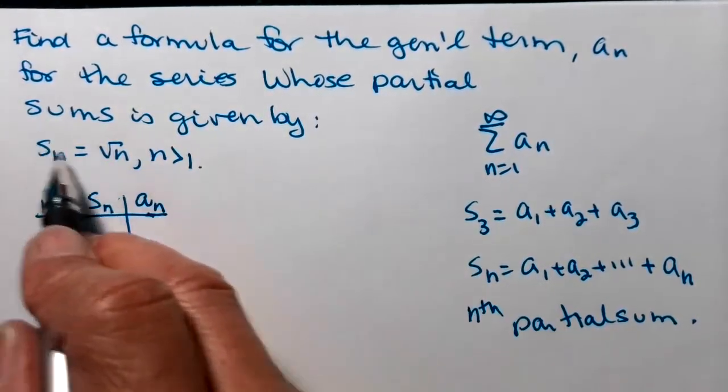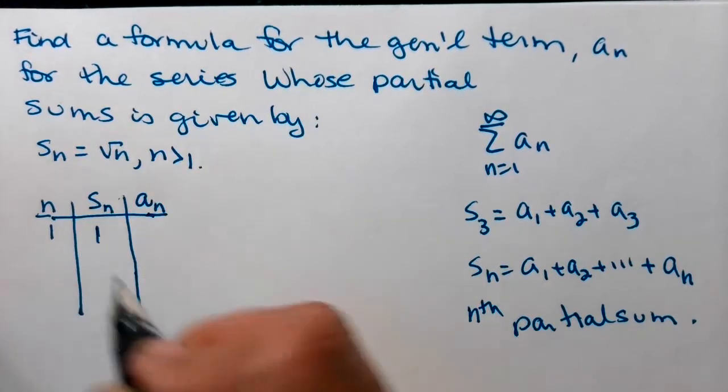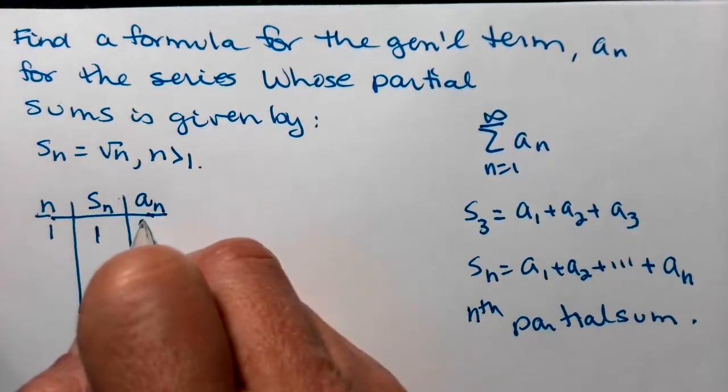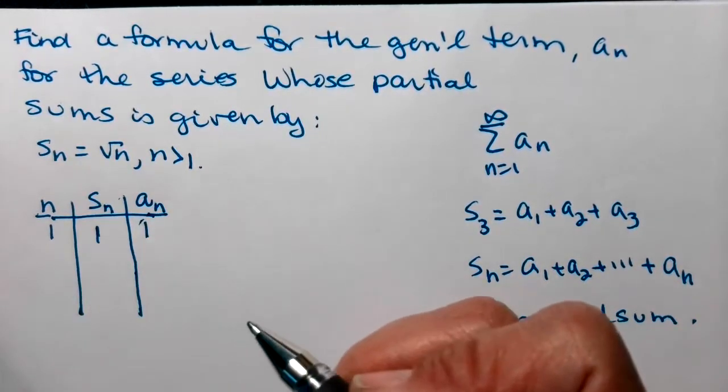So if n is 1, my partial sum is square root of 1, well that's just 1, and the first partial sum is just the first term and the first partial sum are the same.